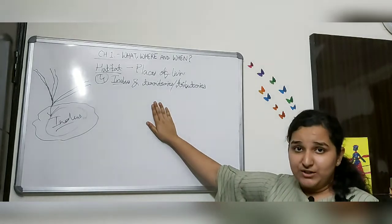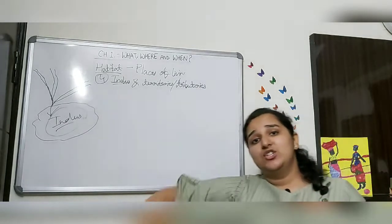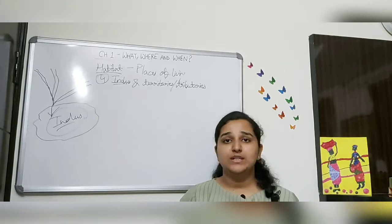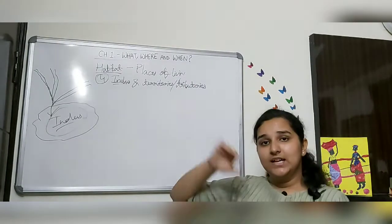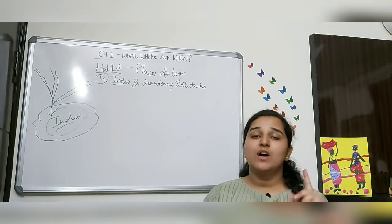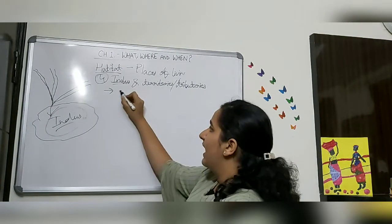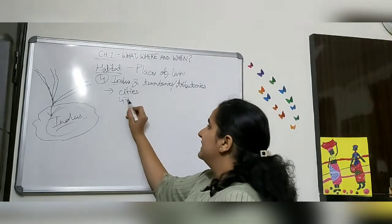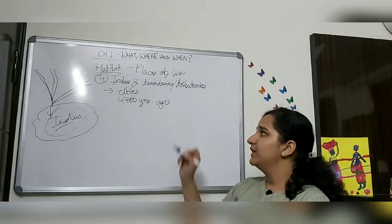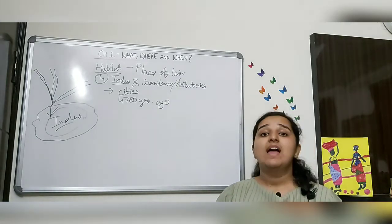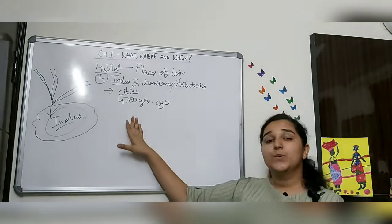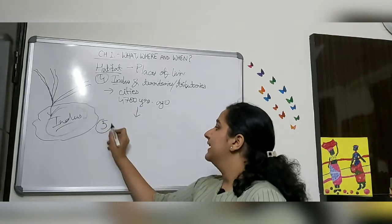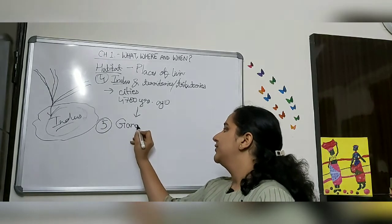The fourth habitat was the Indus River and its tributaries. A major change to note here is that from villages, cities now developed in the Indus region. This was the first time people in India started living in places called cities, and this was about 4700 years ago. This is the distinguishing characteristic of this stage of habitat.